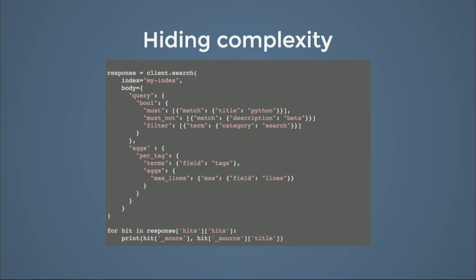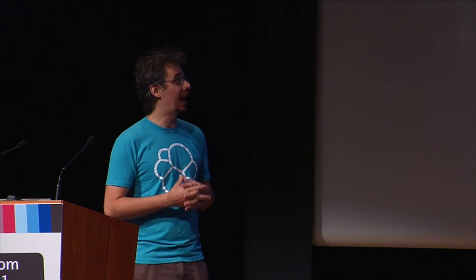Here is a query for Elasticsearch. Don't worry if you don't understand it. Essentially, I'm looking for something that matches 'Python' in the title, it must not match 'beta' in the description, I'm filtering only packages in category 'search', and I want to do some aggregations — the distribution of tags and the maximum lines. What's important is that there is a lot more on the screen than what I just described. In the end, it just prints out with the relevancy score and the title. So there isn't really a lot going on, but there is a lot being typed.